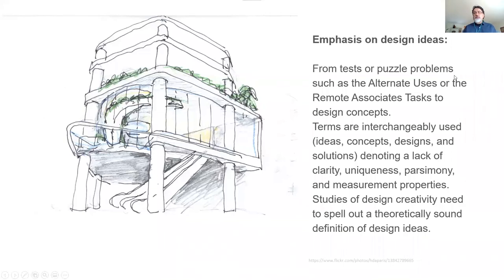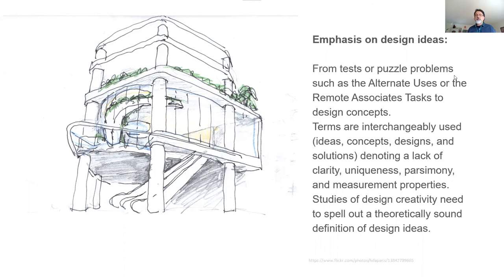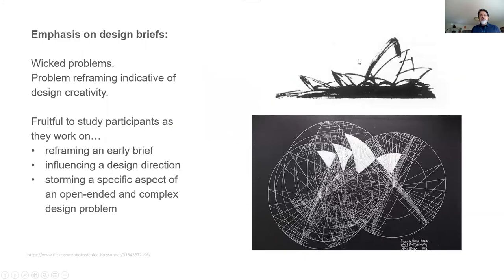We also need to pay more attention to the type of ideas that we generate, because a lot of design ideation research borrows heavily from cognitive science and creative cognition studies, where an idea is essentially a response to standardized tests or puzzle problems such as alternate uses or remote associate tasks. But what does that really mean in design? We tend to use terms like ideas, concepts, designs, and solutions interchangeably, and we need a stronger theoretical framework to distinguish them.